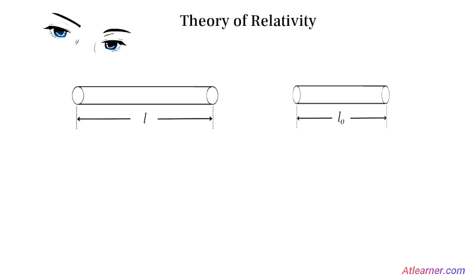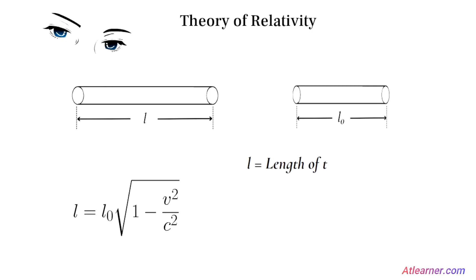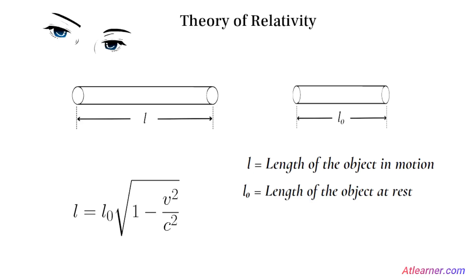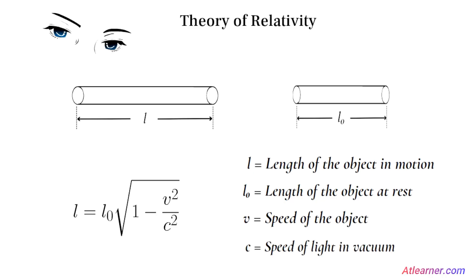This variation of length in relative motion can be measured using this formula: L equals L₀ multiplied by the square root of 1 minus V squared divided by C squared, where L is the length of the object in motion, L₀ is the length of the object at rest, V is the speed of the object, and C is the speed of light in the vacuum.